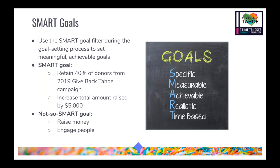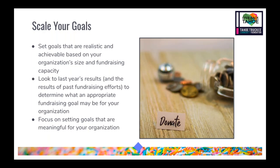Here are a couple of examples of SMART goals: maybe you want to retain 40% of donors from your 2019 Give Back Tahoe campaign, or increase your total amount raised by $5,000. Make sure goals are specific to your nonprofit and actually realistic. For some nonprofits, raising $5,000 more is unrealistic — a more appropriate goal might be raising $500 more. Create a goal that is actually achievable for your nonprofit.